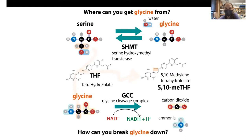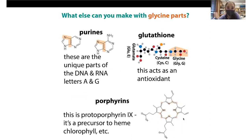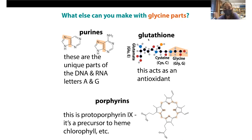You can also break glycine down through the glycine cleavage complex, which breaks it down into carbon dioxide and ammonia. Glycine's parts can also be used to make other things: its parts are used to make purines — the double-ring nucleobases A and G in DNA and RNA. It can also be used in the tripeptide glutathione, which is used as an antioxidant to counter oxidative stress and reverse cysteine cross-links. And glycine can be used to make porphyrins, like heme in hemoglobin, which helps carry oxygen.